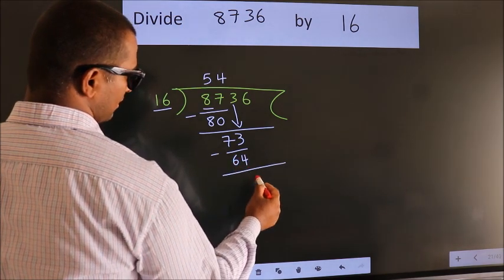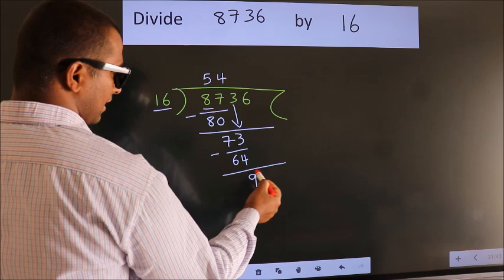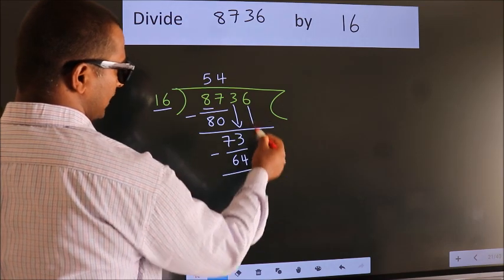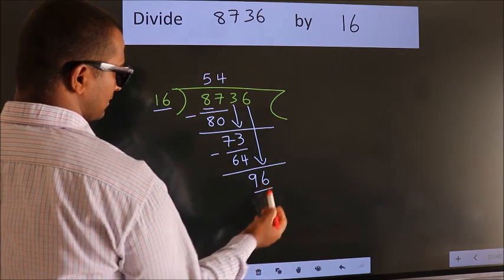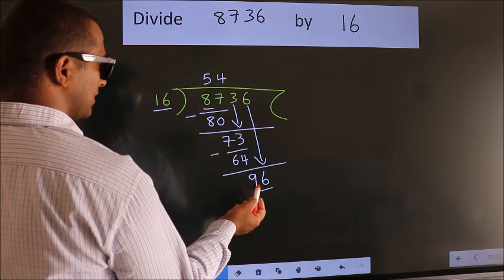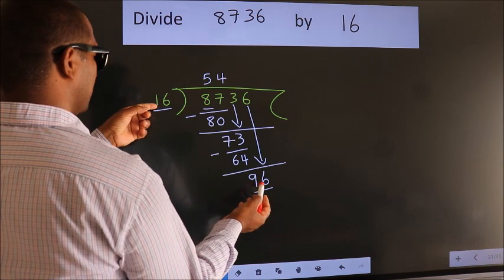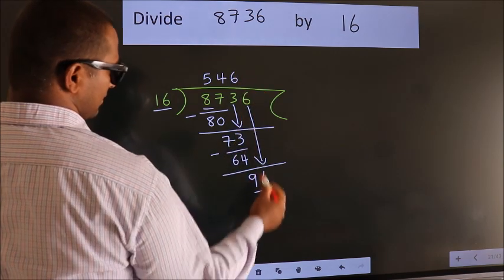Now we subtract. We get 9. After this, bring down the beside number. So 6 down, so 96. When do we get 96? In 16 table, 16 six, 96.